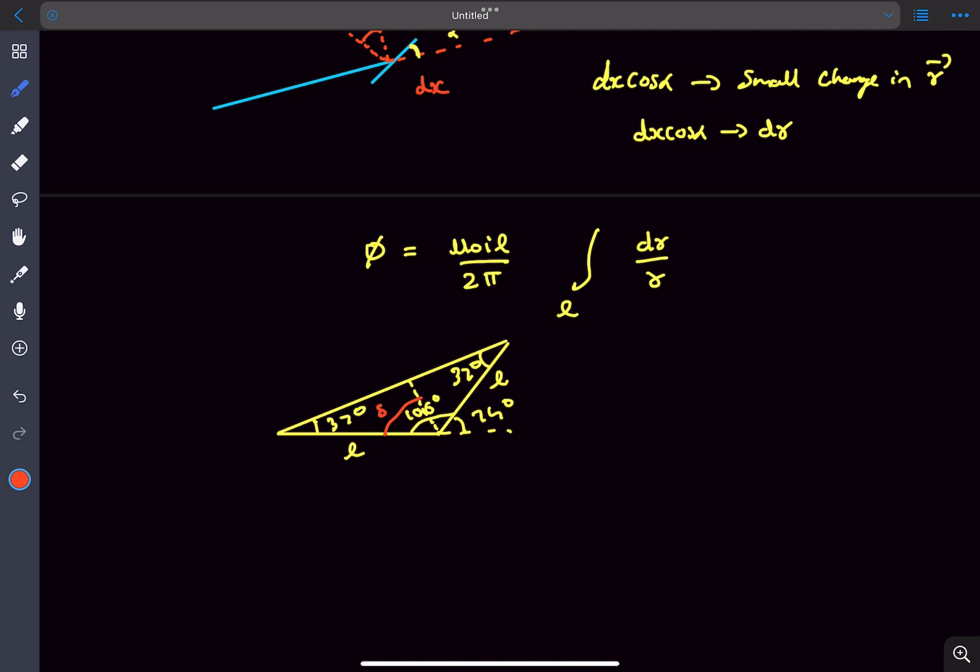Now if you try to drop a perpendicular from here, this angle is simply 53 degrees and this component is going to be L sin 53. So the final length, the upper limit, is going to be 2L sin 53, which is 8L by 5.